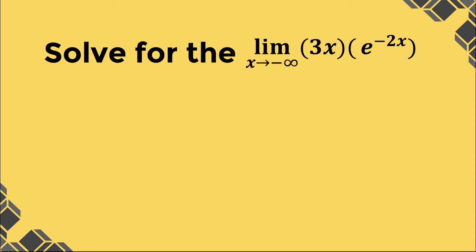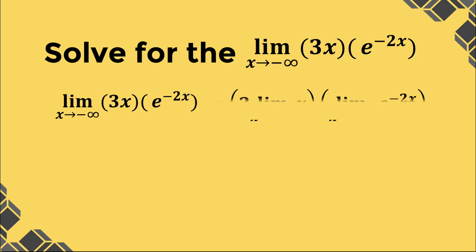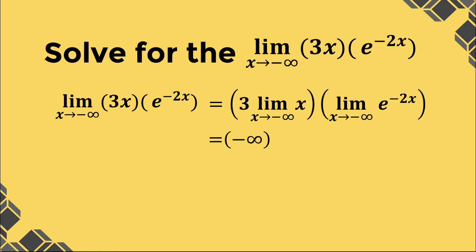Let's solve for the limit of 3x times e raised to negative 2x, as x approaches negative infinity. Using limit laws, we can write the given as 3 times the limit of x as x approaches negative infinity, times the limit of e raised to negative 2x as x approaches negative infinity. Evaluating the limit as x approaches negative infinity, we have negative infinity times 3, which is equivalent to negative infinity.